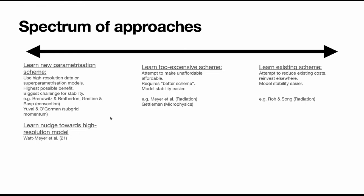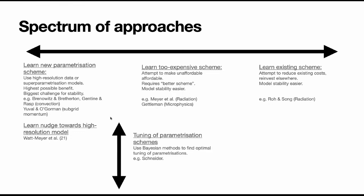On the far right of the spectrum, you have learning existing schemes — the aim being to accelerate a piece of code so you can reinvest it elsewhere, running at higher resolution or getting your answer faster. This is the easiest in terms of model stability but probably promises the lowest possible gains, since you're not explicitly making your model better. There are examples in radiation and others. There's also interesting work using Bayesian methods to find optimal co-tuning of parameterization schemes, as in Tapio Schneider's group at Caltech.